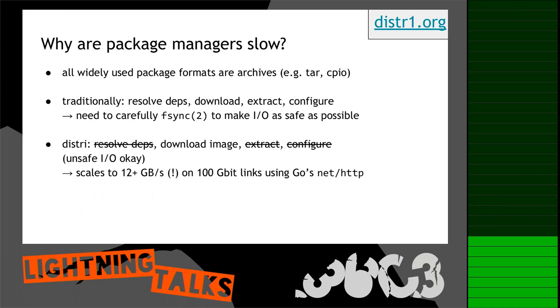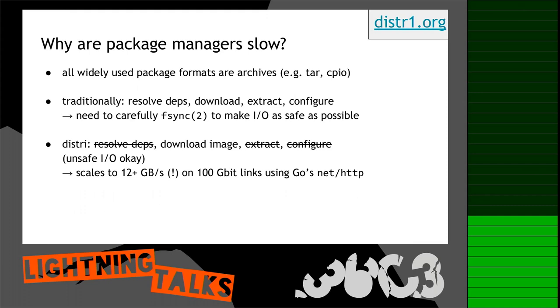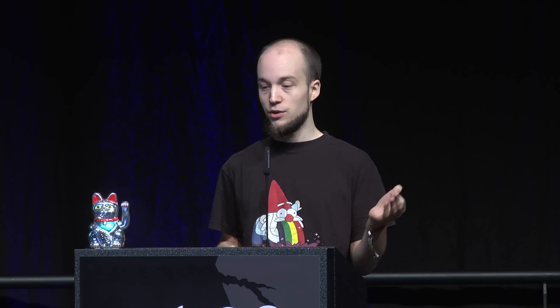On top of that, package managers need to carefully use the fsync system call to make all IO as safe as possible, so if your laptop battery dies mid-installation your system still works. In distri, we've removed all those stages: no global dependency resolution, only image file downloads, no extraction, no configuration — and due to our design we can use unsafe IO. This scales to 12+ gigabytes per second on a 100 gigabit link using just the standard Go net/http package.